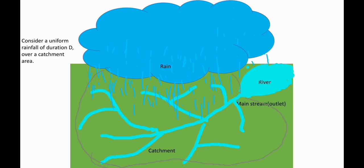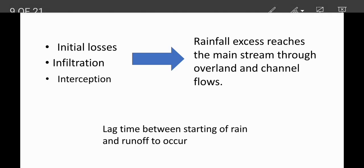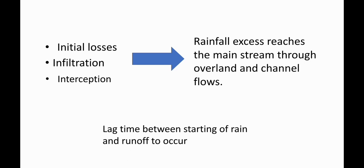Suppose this is a catchment area and rainfall of duration D occurs over this area. What will happen? Initially, there will be losses due to processes like infiltration and interception. The water will take time to reach the outlet. There will be a lag time between the start of rain and when runoff or discharge occurs. So initially, the discharge will not increase.